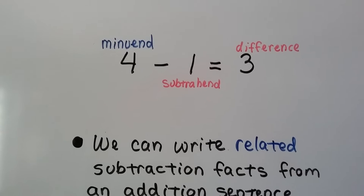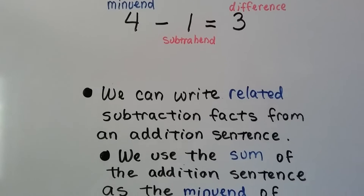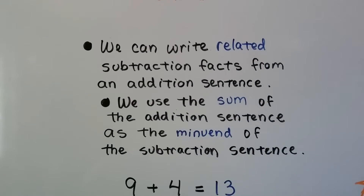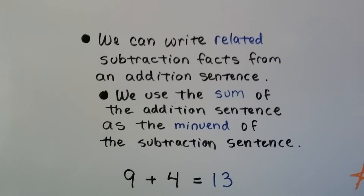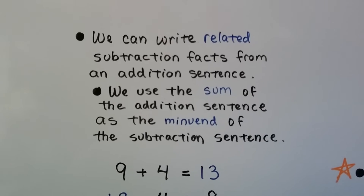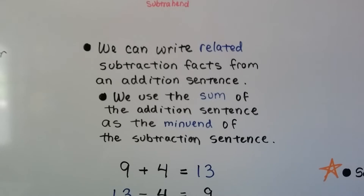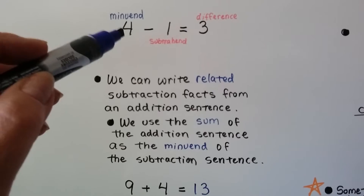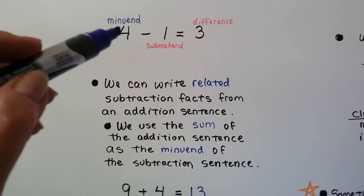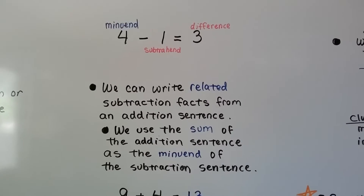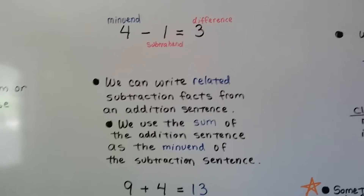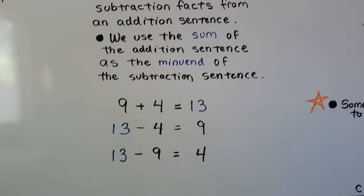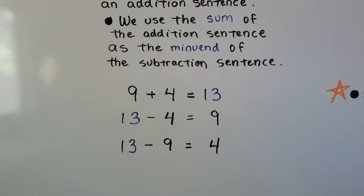We can write related subtraction facts from an addition sentence. We use the sum of the addition sentence as the minuend of the subtraction sentence. That will be the sum of the addition sentence, and we'll use it as the minuend of the subtraction sentence.